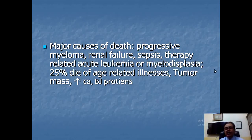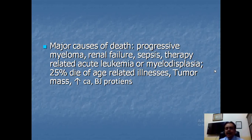Major causes of death include progressive multiple myeloma — where all available drugs have been exhausted and the disease continues to progress — worsening renal failure, sepsis despite therapy, leukemia caused by chemotherapeutic agents, and myelodysplasia. Twenty-five percent of patients die of age-related illness depending on tumor burden. Hypercalcemia and the presence of Bence Jones proteins are also predictors of poor prognosis.